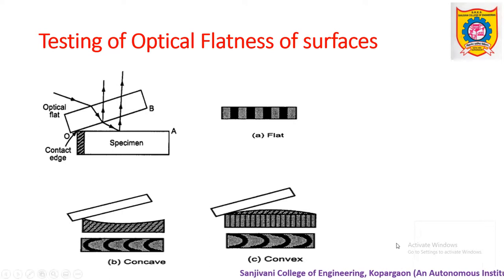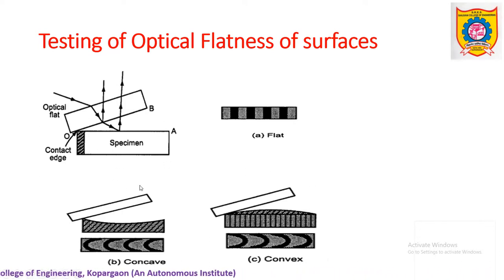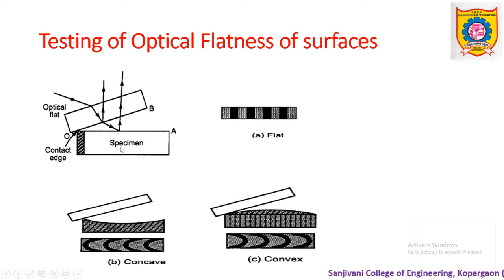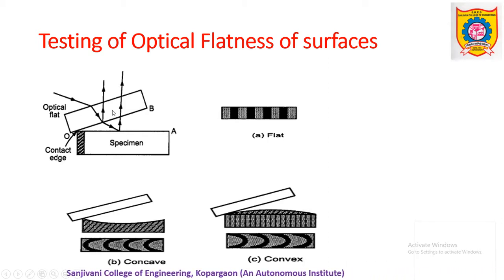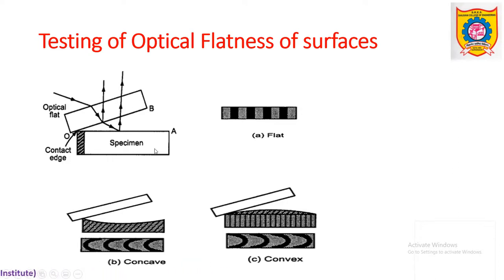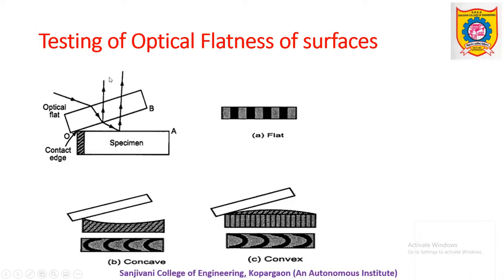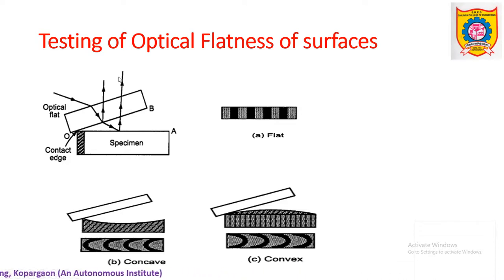How is it possible? For that purpose, we can use the interferometry concept, particularly the concept of wedge film theory. Suppose we have one specimen — specimen A — which is to be tested for its optical flatness. Another standard optically flat surface, say B, is placed on surface A so that it creates a wedge film in between. If the system is illuminated by a monochromatic beam of light, then the interference pattern can be seen using a travelling microscope. This we have already discussed in previous videos.